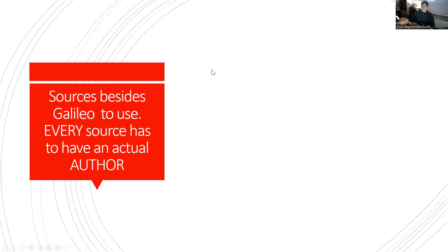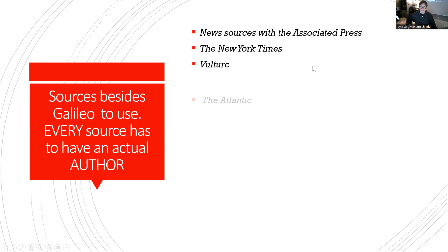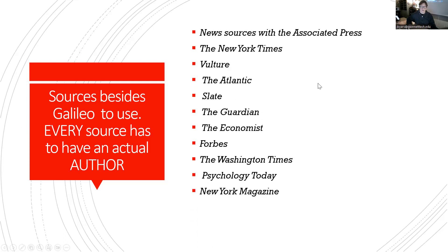Now, sources. A lot of people used sources in Essay 1 that were from encyclopedias, dictionaries, online university websites written by a no-name person. I don't want that for this essay. Every source you use — and there are just two — has to have an actual author; not a group, not anonymous, an actual author. I really want you to find sources from outlets like the New York Times, Vulture, The Atlantic, Slate, The Guardian, The Economist, Forbes, Washington Times, Psychology Today, or New York Magazine.